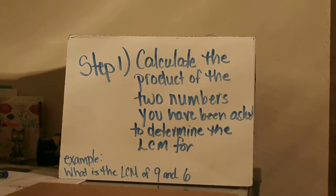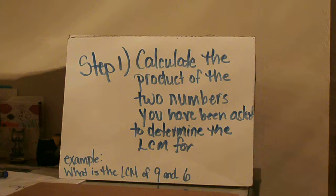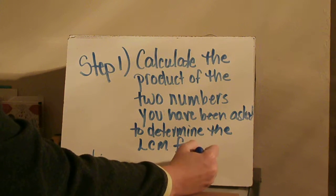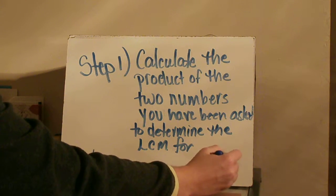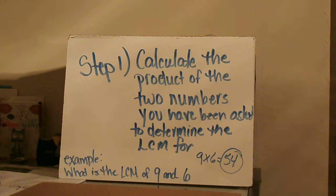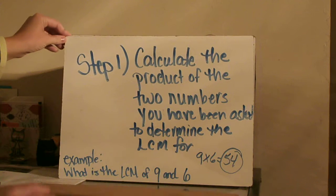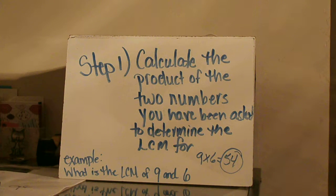Step one is to calculate the product of the two numbers you've been asked to determine the LCM for. For example, let's say that we were asked to find the least common multiple of 9 and 6. So the first thing we're going to do is say, what is 9 times 6? Well, 9 times 6 is equal to 54. We need to keep this number in mind as we move on. Step one: find the product of the two numbers — in this example, 9 times 6, which is 54.